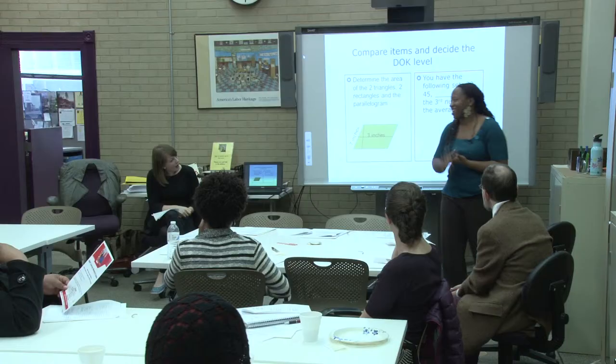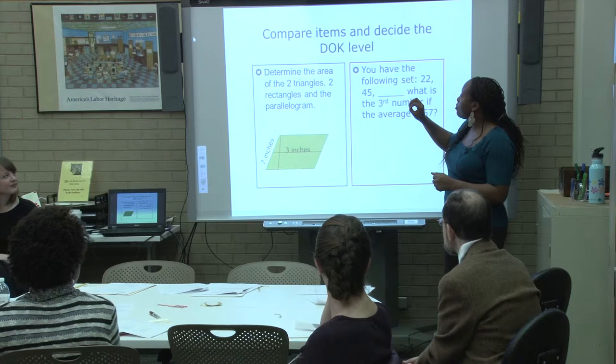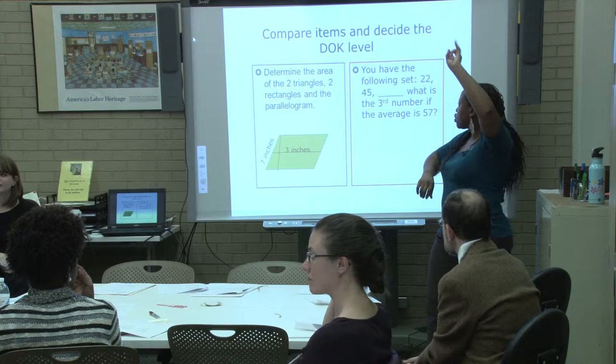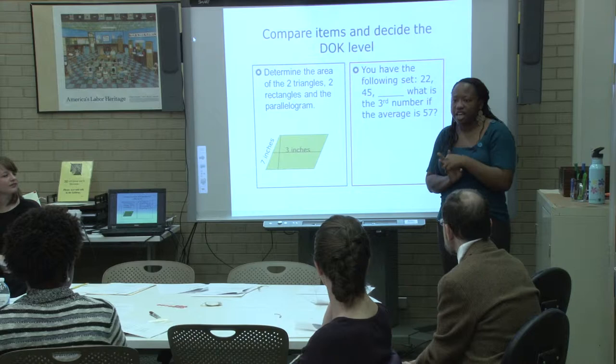So we're going to pull everybody back together. You have the following set: number 22, 45, and blank. What is the third number if the average is 57? What type of question is this — Level 1, 2, or 3?